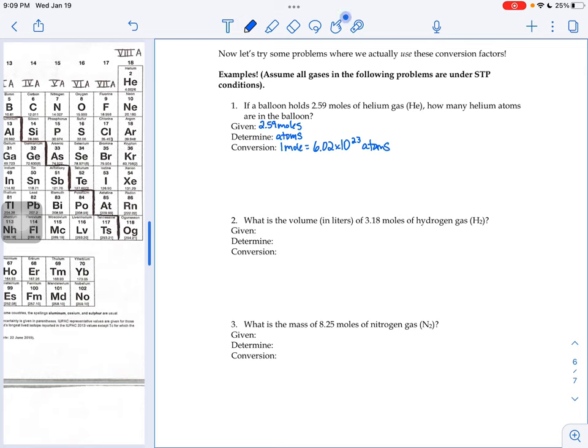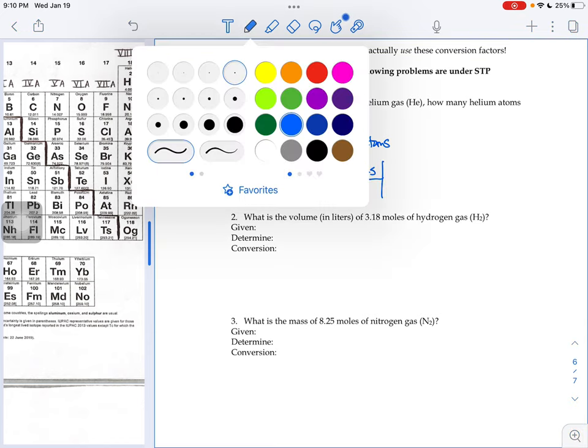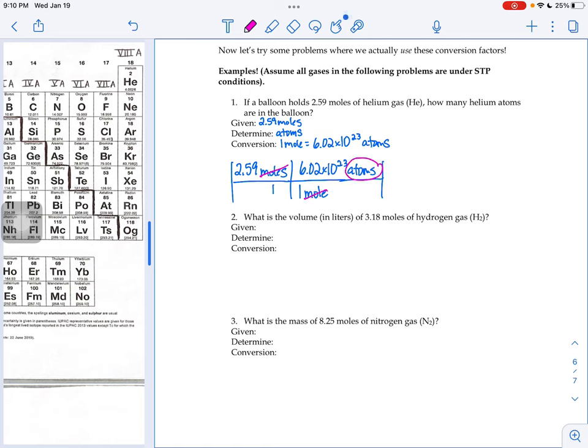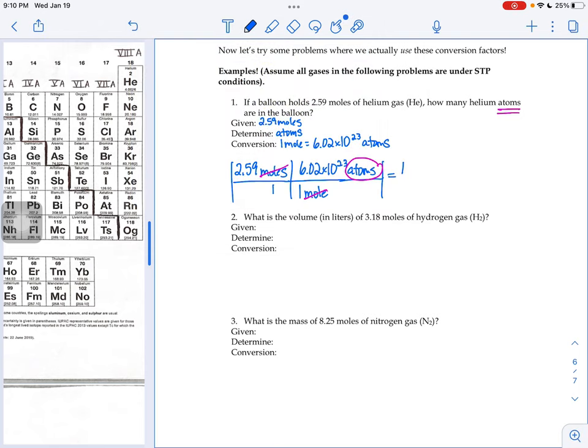And then it's like any other factor label problem you've ever done. Take your given, put it over the number 1. Then we want those moles to cancel out and go away. So I'd use my conversion factor and put the 1 mole part on the bottom. The 6.02 times 10 to the 23rd atoms goes on the top. My moles and moles would cancel out. I'd just be left with atoms. So that's how I know I'm done with the problem because I hit the right unit. I was trying to get to atoms and I'm there.